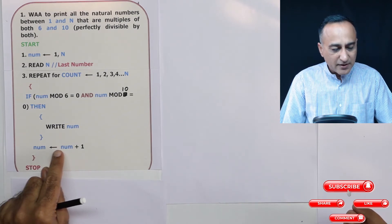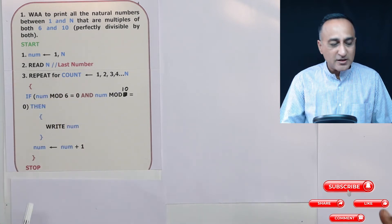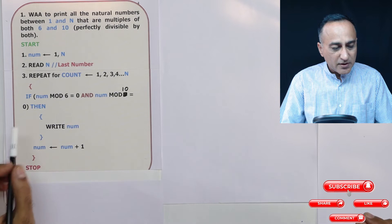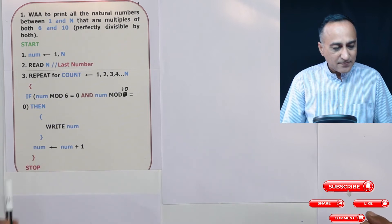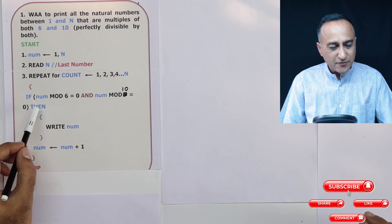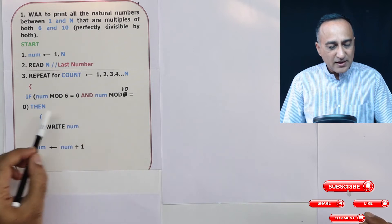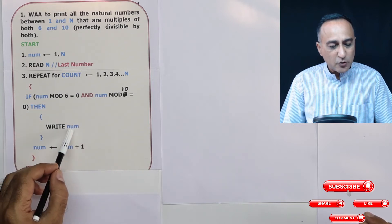This is a common mistake: you will forget to increase number by one, then this will only check for the first number. So you need to understand a couple of things. This block here in the blue is associated with this if-then, that means if number mod 6 and number mod 10 remainder is zero, then I'm going to print the number.